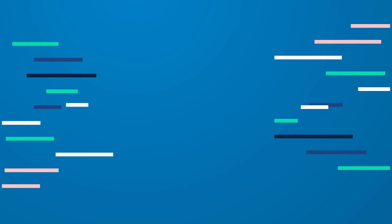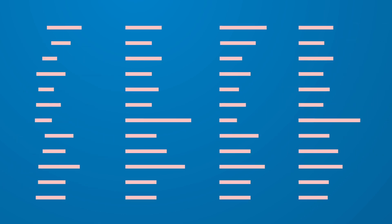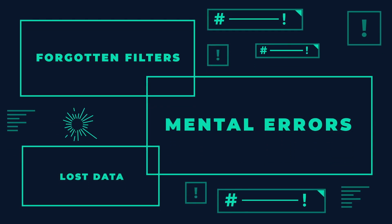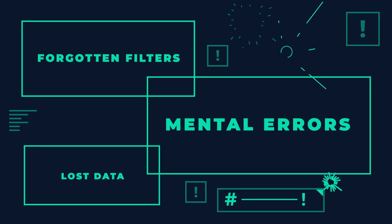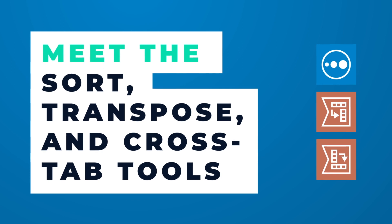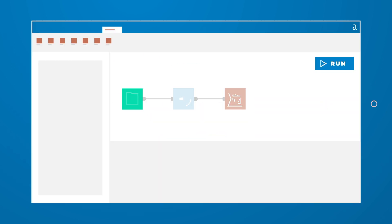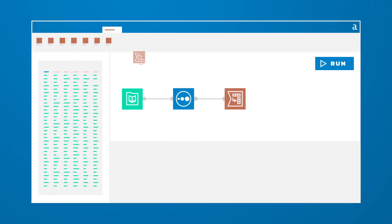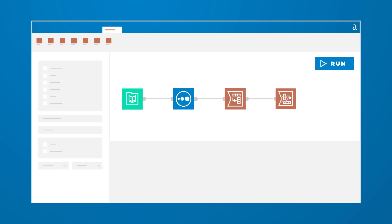By performing common data transformation functions with highly intelligent tools, you can reduce errors and risk as you move through the most exciting part of your work. Meet the Sort, Transpose, and Crosstab tools in AlterX. These tools allow you to organize and pivot your orientation to data in many different directions automatically, transforming it into a more meaningful format that is analysis-ready.